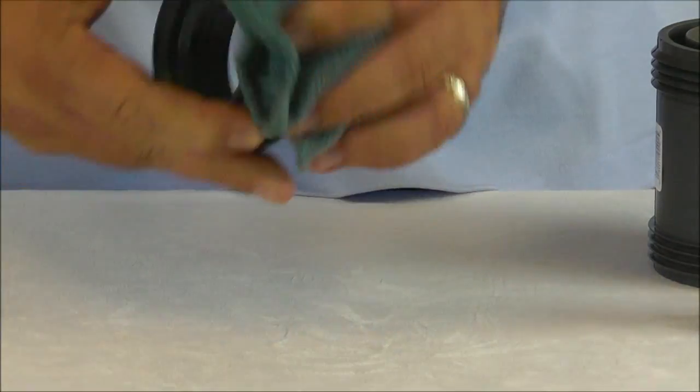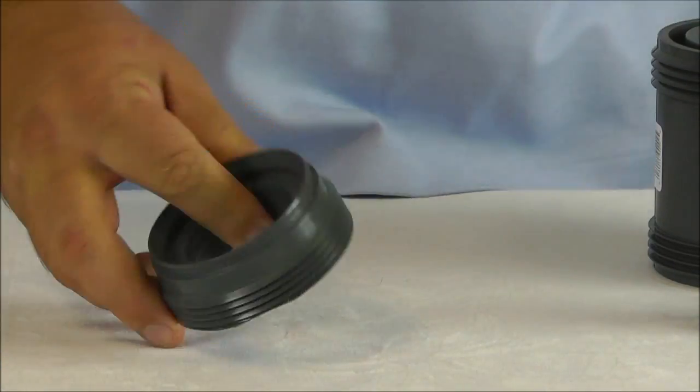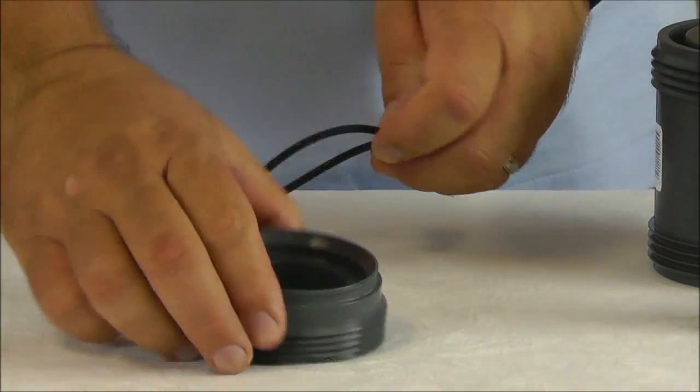Now the valve is fully disassembled. Clean the seal carrier, then lubricate and replace the seal carrier o-ring.